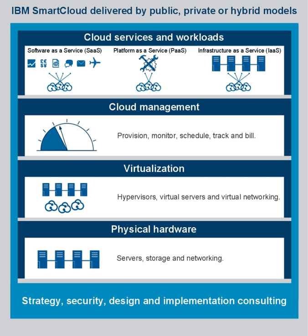Hybrid cloud options allow for some processes to be hosted and managed by IBM, while others are kept on a private cloud or on a VPN or VLAN. IBM also offers planning and consultation throughout the deployment process. IBM offers five cloud provision models: private cloud owned and operated by the customer; private cloud owned by the customer but operated by IBM or another provider; private cloud owned and operated by IBM or another provider; virtual private cloud services based on multi-tenanted support for individual enterprises; and public cloud providers.